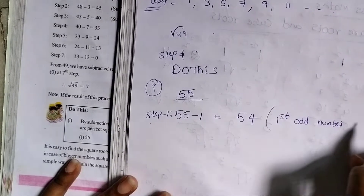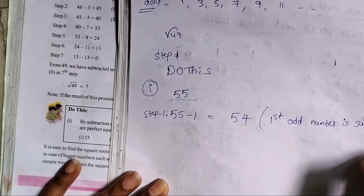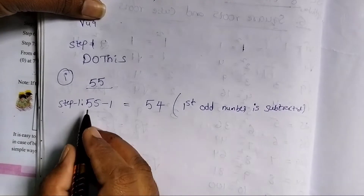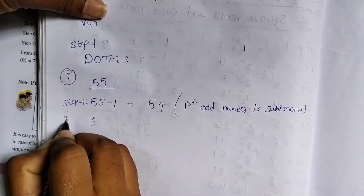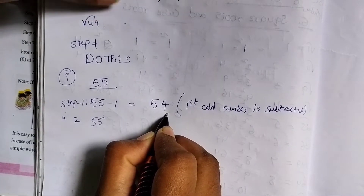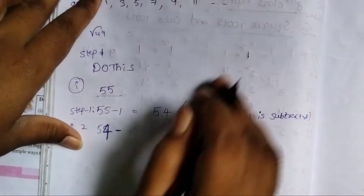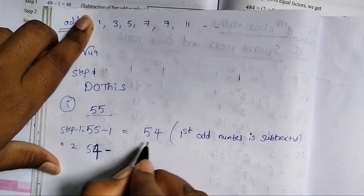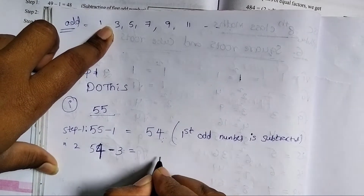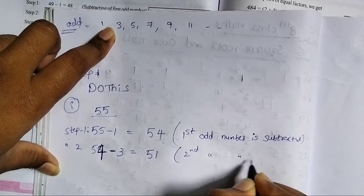Step 1: first odd number 1 is subtracted. 55 minus 1 equals 54. Step 2: second odd number 3 is subtracted. 54 minus 3 equals 51. Second odd number is subtracted.